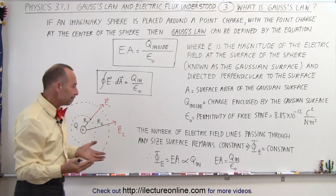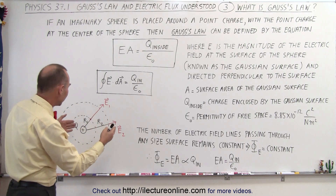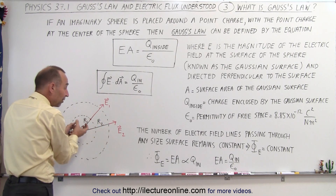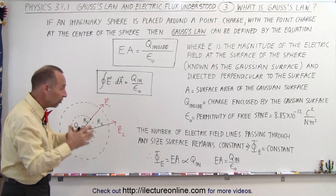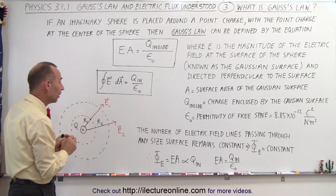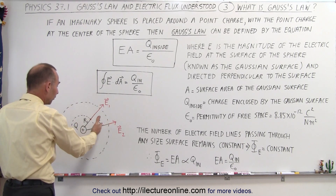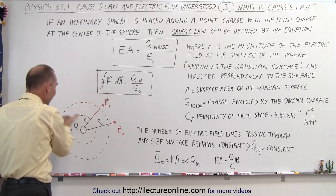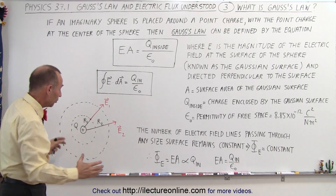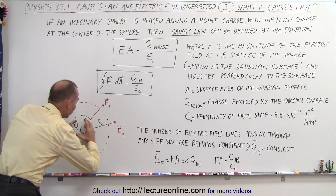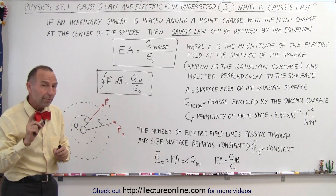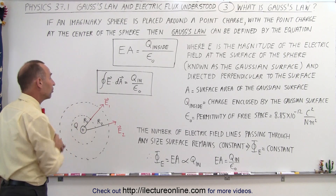Another way to think about it is that the number of electric field lines emanating away from a charge depends upon how much charge you have, but the number will remain the same — it's simply proportional to the amount of charge. So no matter where you draw the Gaussian surface, the number of electric field lines coming through and poking through the surface is going to be constant, whether you draw a small sphere, a big sphere, or a really big sphere. The number of electric field lines is going to be constant.